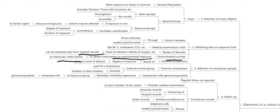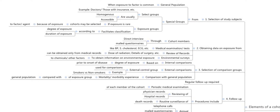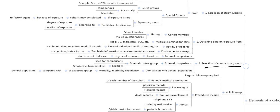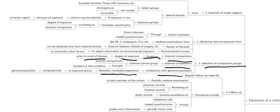The next step is selection of comparison groups. There can be internal comparisons, external comparisons, and comparison with the general population. Internal comparisons are based on the degree of exposure prior to the onset of disease. External comparisons use an external control group — for example, smokers versus non-smokers. Comparison with the general population gives the mortality or morbidity experience of the exposed group compared with the general population.